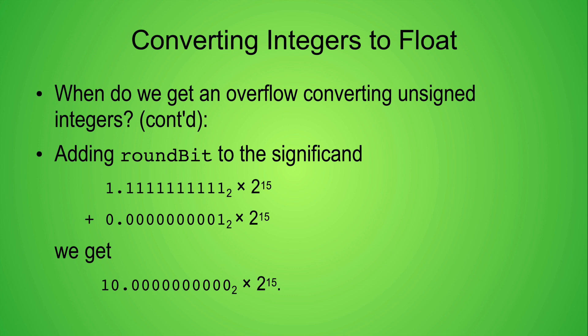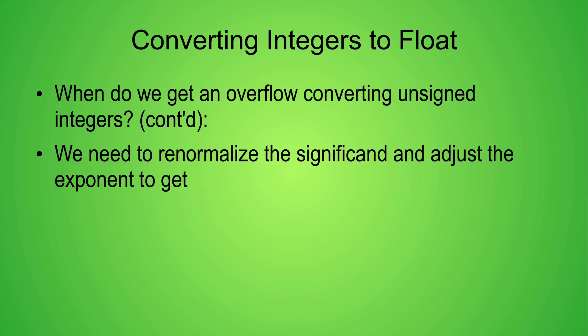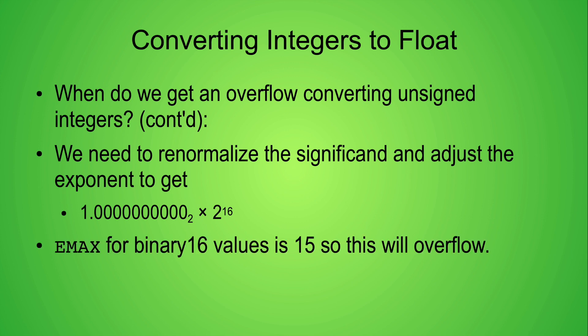As you can see we got a carryout because we have more than one digit to the left of the binary point. We need to renormalize by shifting the significand one bit to the right and adding 1 to the exponent. Performing these steps our rounded representation will be 1 point followed by 10 zeros times 2 to the 16th power. Remembering that since the maximum exponent value for the binary16 format is 15 we have an overflow and must return positive infinity as a result.